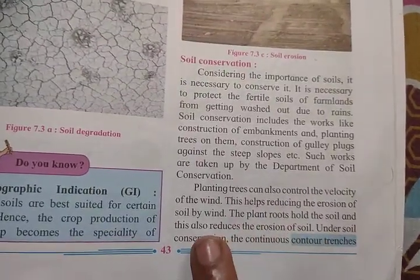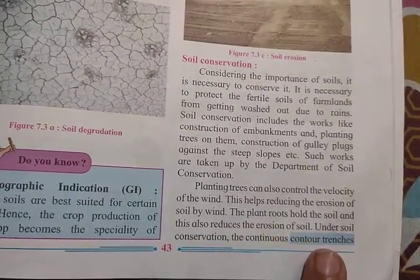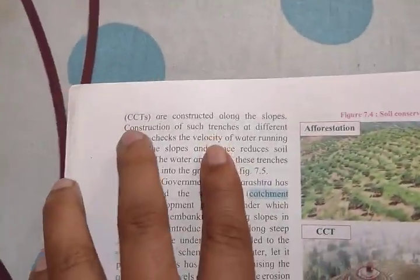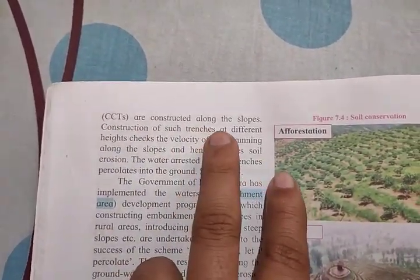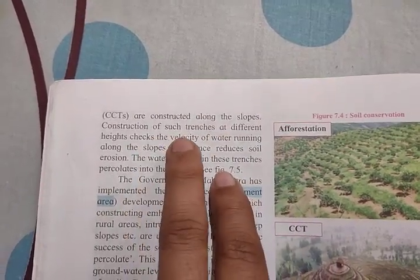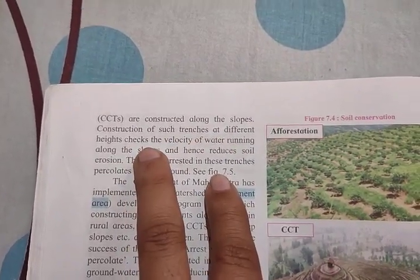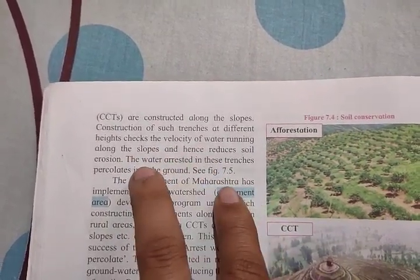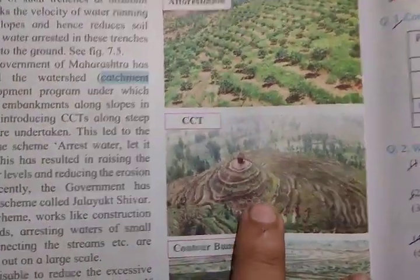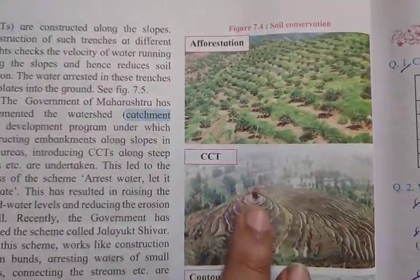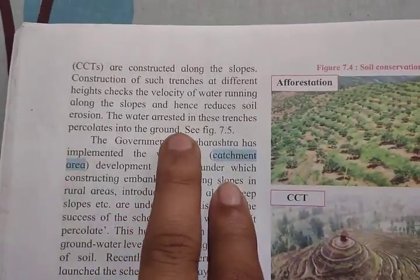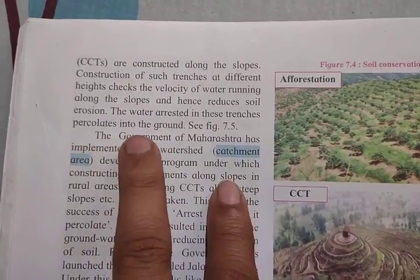The plant roots hold the soil and also reduce erosion. Under soil conservation, continuous contour trenches are constructed along the slope. Constructing such trenches at different heights checks the velocity of water running along the slope and hence reduces soil erosion. The water stored in these trenches then percolates into the ground.